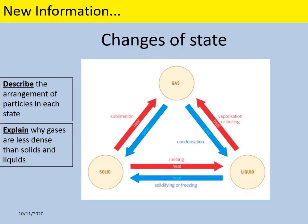So when we talk about changing things between these states there are different words for the changes and you can see them on this diagram. Changing a solid into a liquid is called melting. Changing a liquid back into a solid is called solidifying or freezing. Changing a liquid into a gas is either called evaporation or boiling and changing a gas into a liquid is condensation.